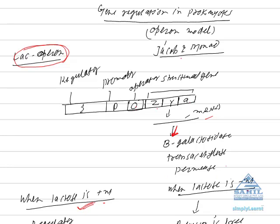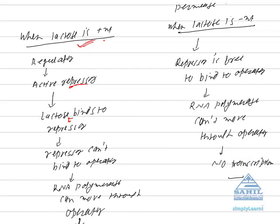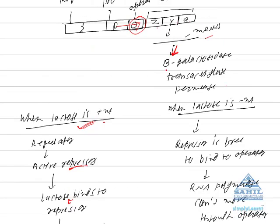If lactose is not present, repressor is free to bind to the operator gene. So if the site is blocked, RNA polymerase cannot move through it and it is not transcribed.